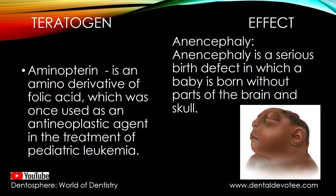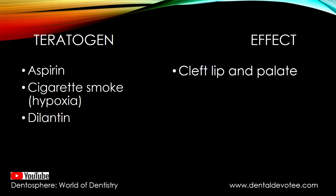First in the list is aminopterin. It is an amino derivative of folic acid which was once used as an antineoplastic agent in the treatment of pediatric leukemia. The teratogenic effect it produces is anencephaly, which is a serious birth defect — seen in the picture — in which a baby is born without parts of the brain and skull. Aminopterin causes anencephaly.